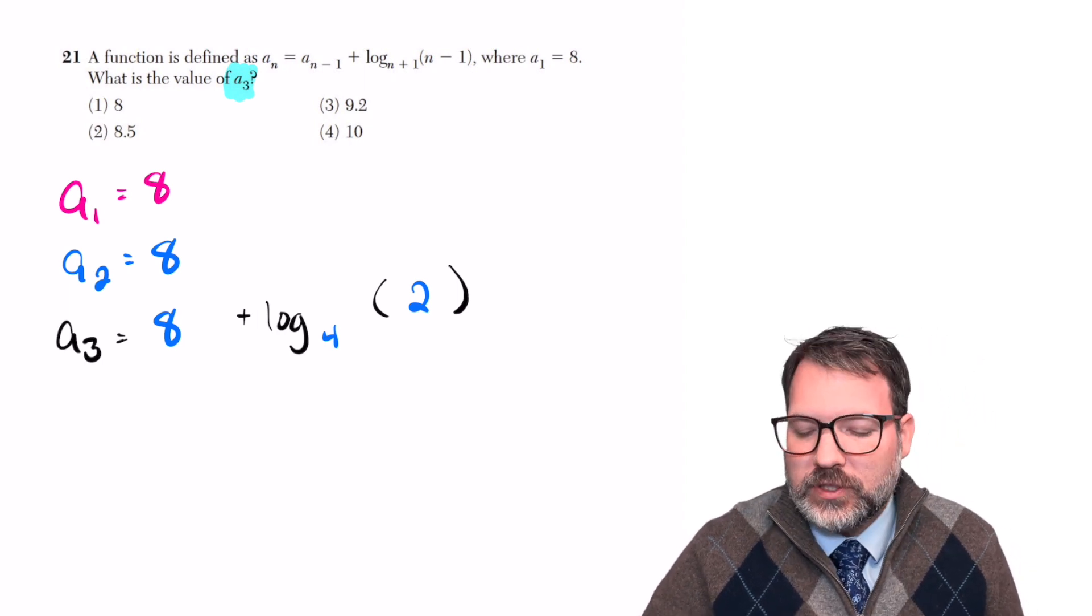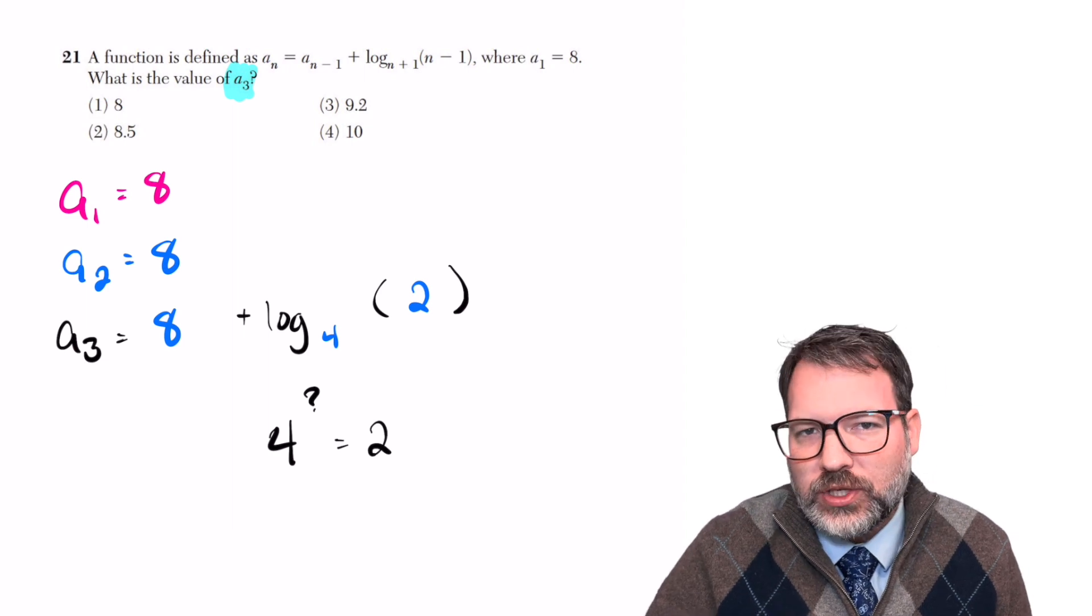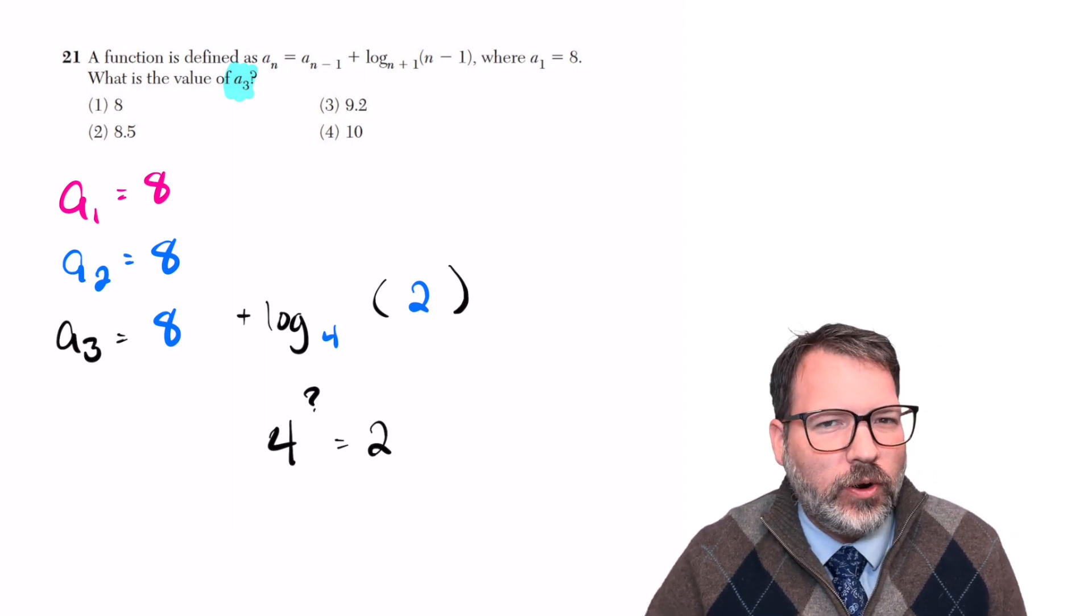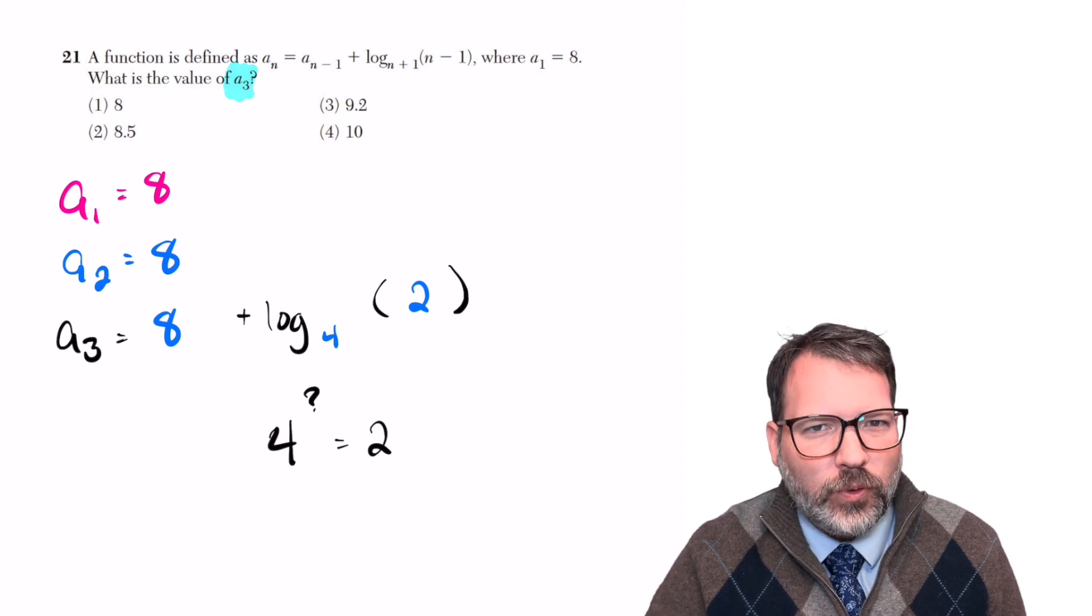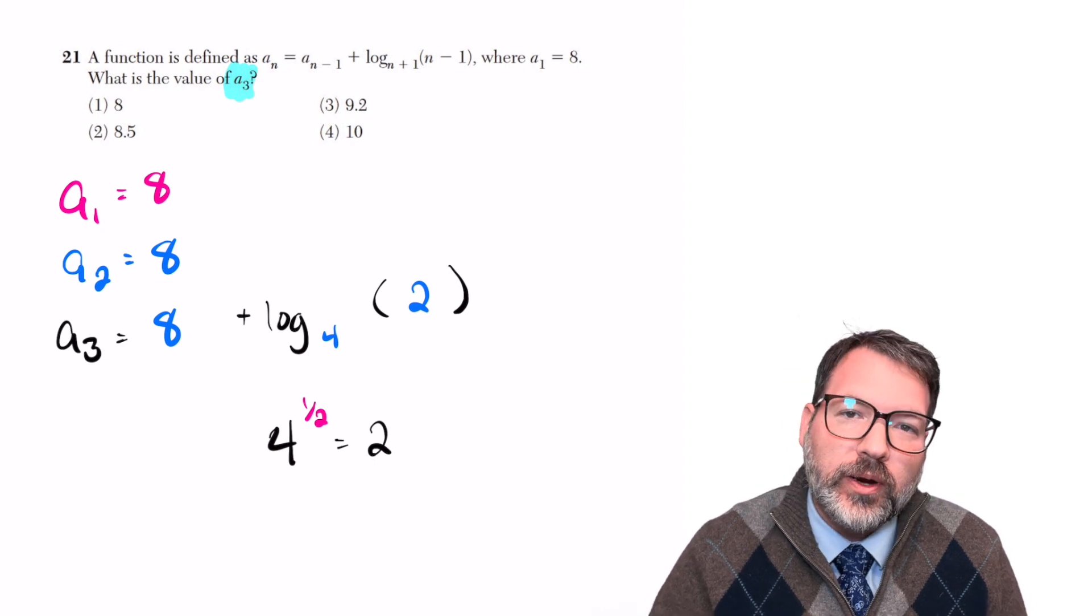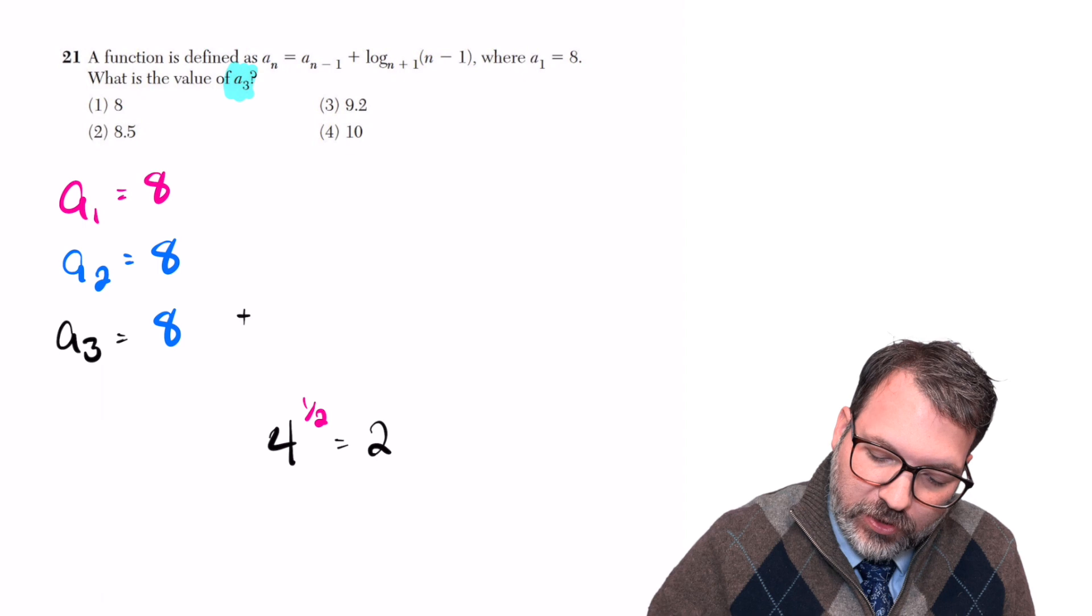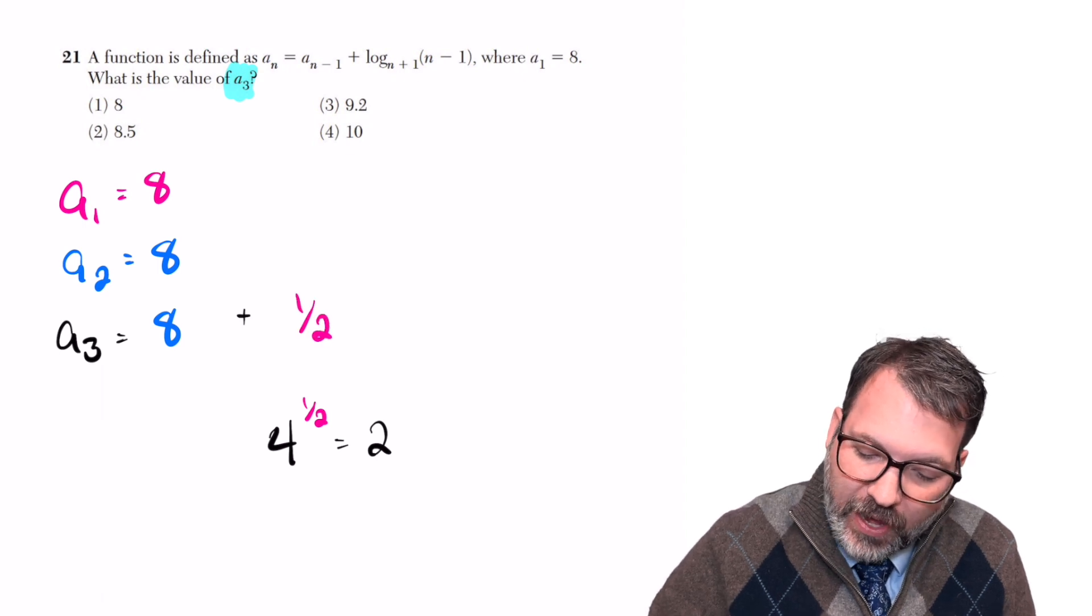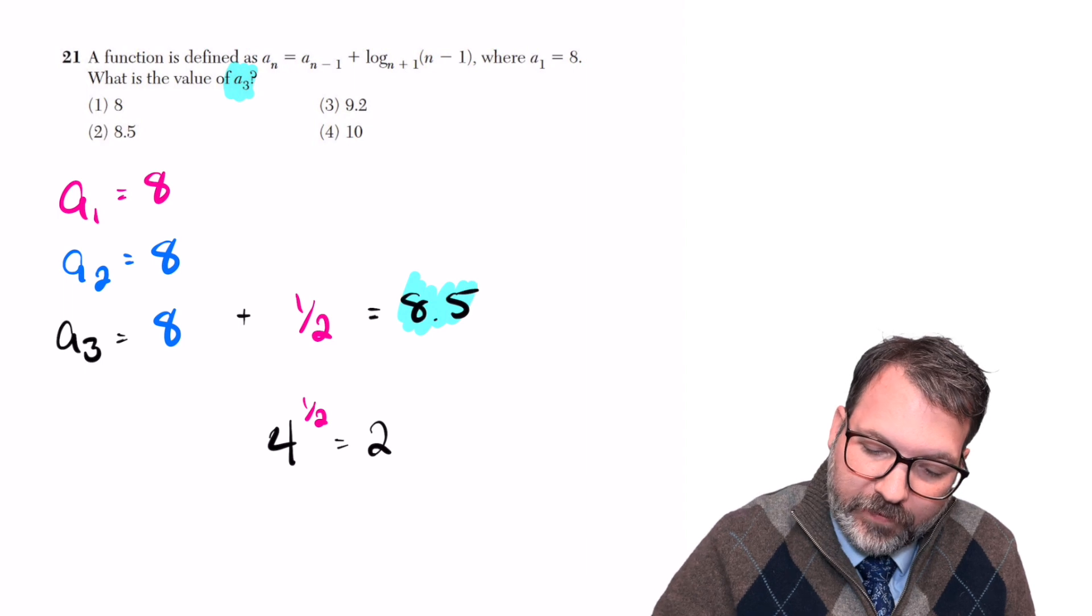And then log base 4 of 2 is a little bit tougher. We're asking what power of 4 is 2, which is a little bit strange because normally we would say what power of 2 is 4. 2 squared makes 4, but that's actually the same thing as saying 4 to the 1 half power is 2. A square root and a half power are equivalent. So this log base 4 of 2 is actually equivalent to 1 half, and therefore our a sub 3 is equal to 8.5.